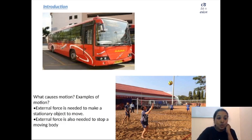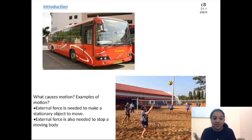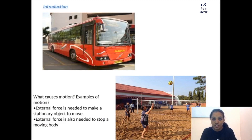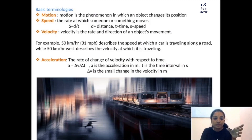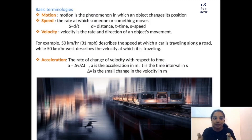So what causes motion? Obviously some external force is needed to move an object or to stop an object which is moving. Examples of motion: whenever we observe an object changing its position, that object is in motion. So I have written basic terminologies related to force, in which I've defined motion, speed, velocity, and acceleration. Motion means change in position of any object with respect to time — the object is said to be in motion.